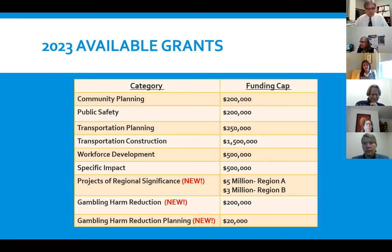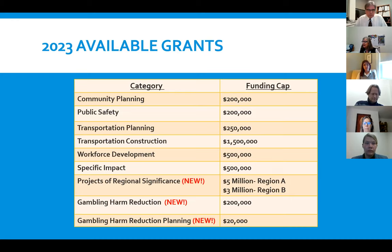Specific impact grants are for a maximum of $500,000, found in section 2.6 of the guidelines. These are for projects that don't fit any other category and must provide a thorough description of the identified impact and a resolution to it. An example is the Hampden County Sheriff's Department, which was forced to relocate because their facility was right in the middle of the MGM property — they receive rental assistance through a specific impact grant.